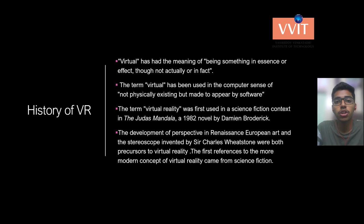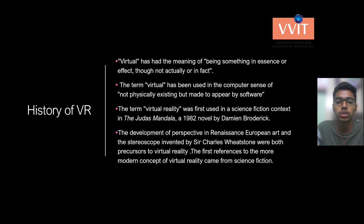Let us see about the history of VR. The term 'virtual' has the meaning of being something in essence or effect though not actually or in fact, and has been used in a computer sense of not physically existing but made to appear by software. The term 'virtual reality' was first used in a science fiction context — in the novel The Judas Mandala in 1982 by Damien Broderick. The development of perspective in Renaissance Europe art and the stereoscope invented by Sir Charles Wheatstone were both precursors to virtual reality.